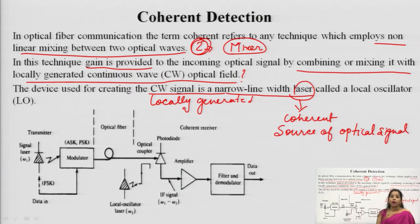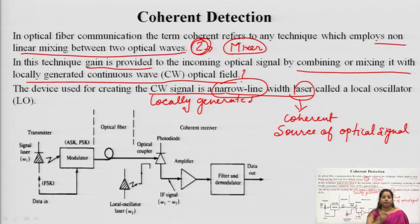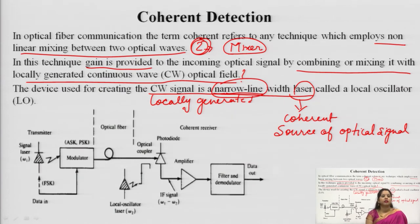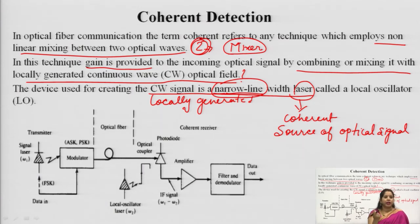We take a laser with narrow linewidth because, as already discussed in unit 2 on attenuation, the signal generated by either an LED or a laser should be of narrow linewidth since linewidth is directly proportional to dispersion. As we increase the linewidth, dispersion increases, the signal gets broadened, and ISI — inter-symbol interference — comes into existence. To reduce dispersion, we use a narrow linewidth source.